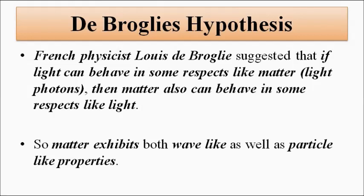The de Broglie hypothesis brought into picture the wave nature of the electron. We all know that light, which is an electromagnetic wave, behaves in some respects like matter — light photons behave like particles. So de Broglie thought that if light behaves like matter, like particles, then an electron which is a particle can also behave like a wave. So matter exhibits both wave-like and particle-like properties, and an electron can also behave as a wave.